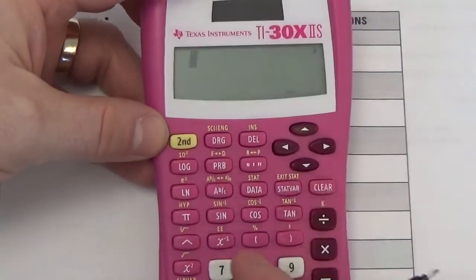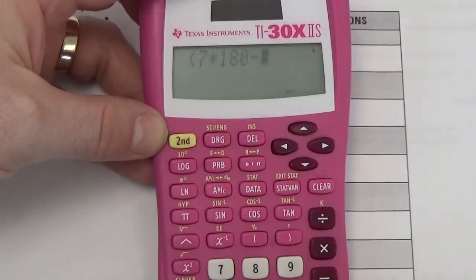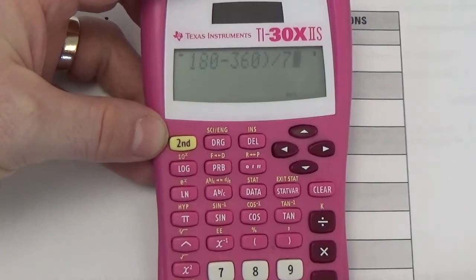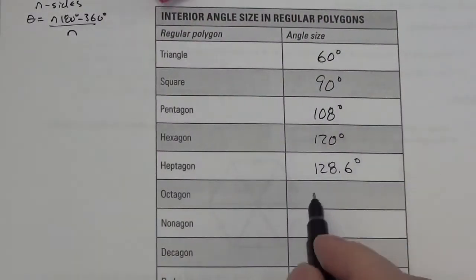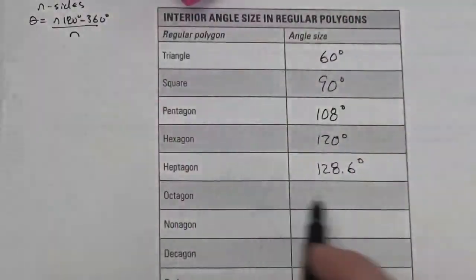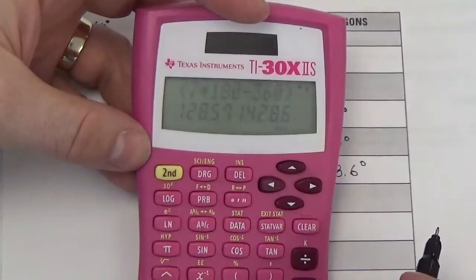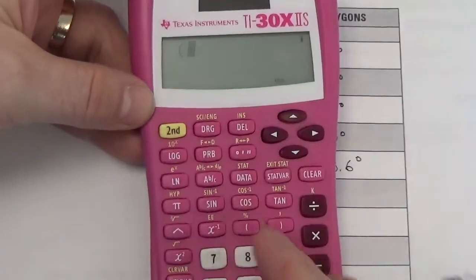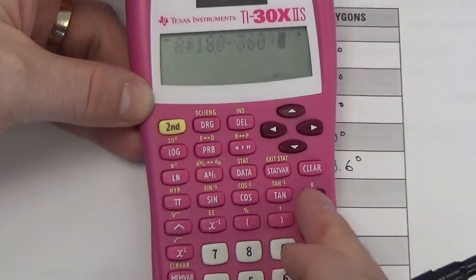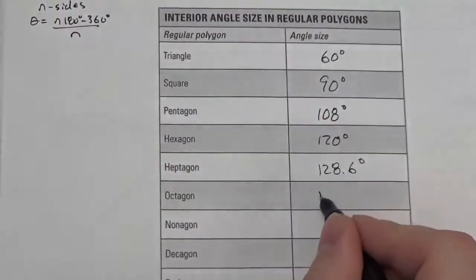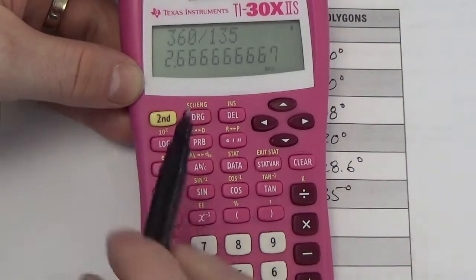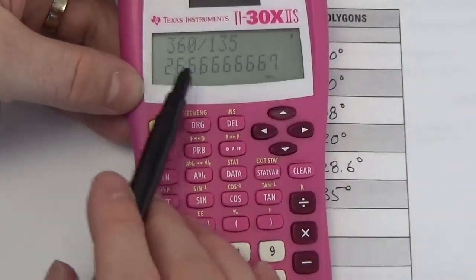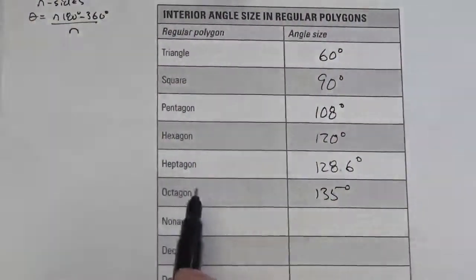What about a heptagon? That's 7 times 180 minus 360, divided by 7. Division by 7 doesn't feel like it's going to be a nice answer — and it's not. We get about 128.6 degrees, which is a pretty ugly angle, and that is clearly not going to divide 360 nicely, so that won't work. Let's try an octagon: 8 times 180, minus 360, divided by 8 — and we get 135. Then 360 divided by 135 — nope, because there's a fraction in there. So an octagon can't be used as a complete tiling.